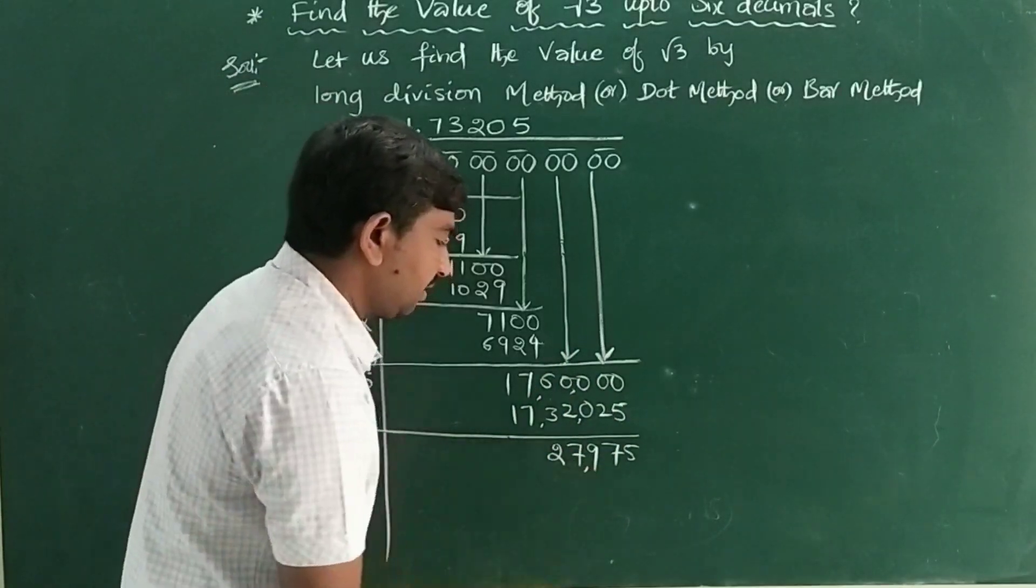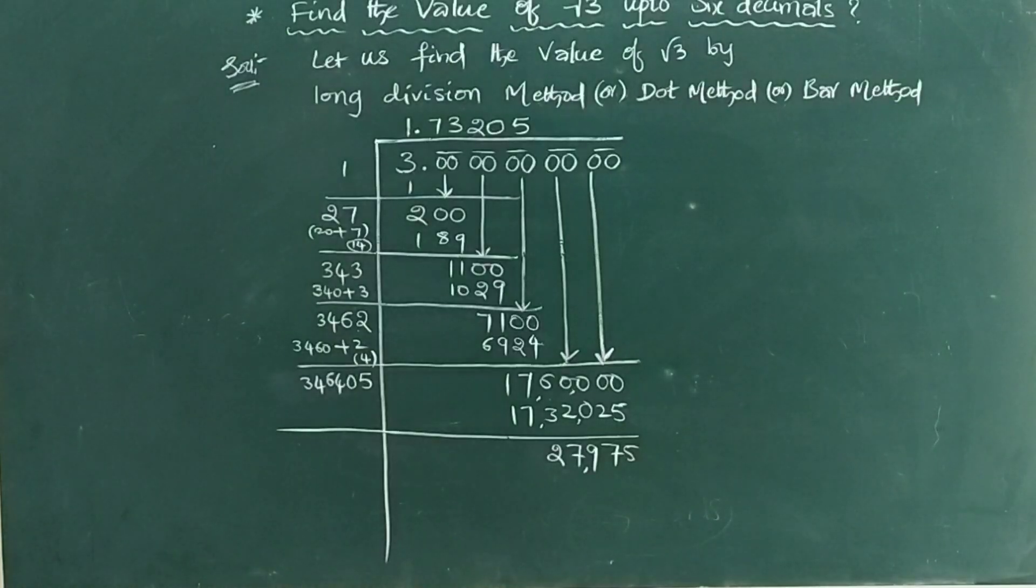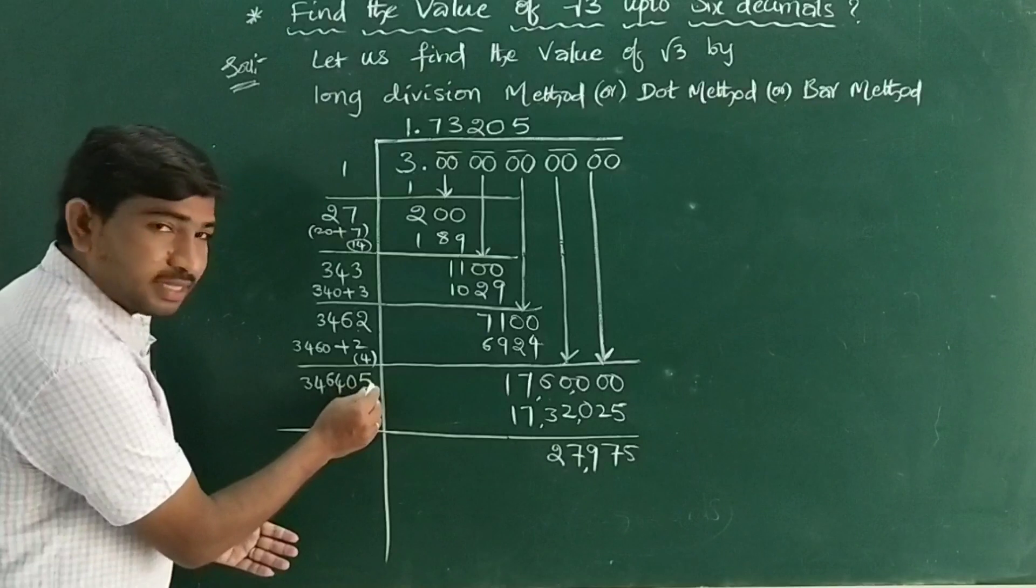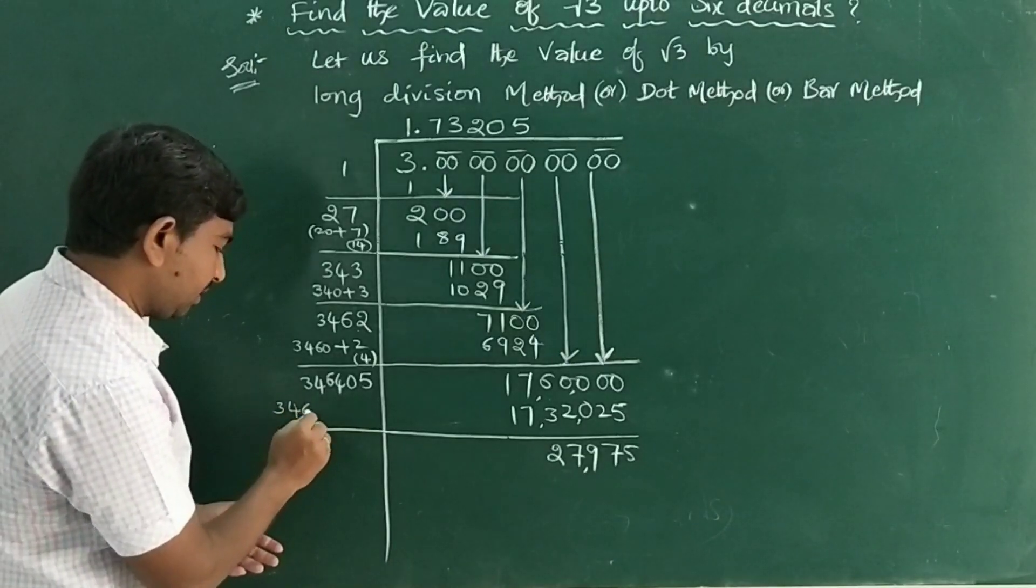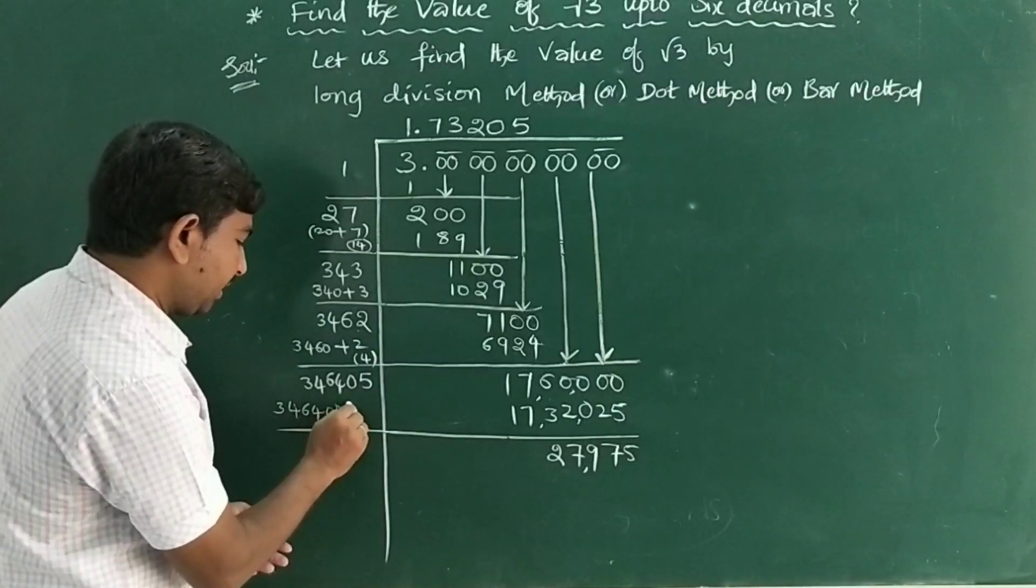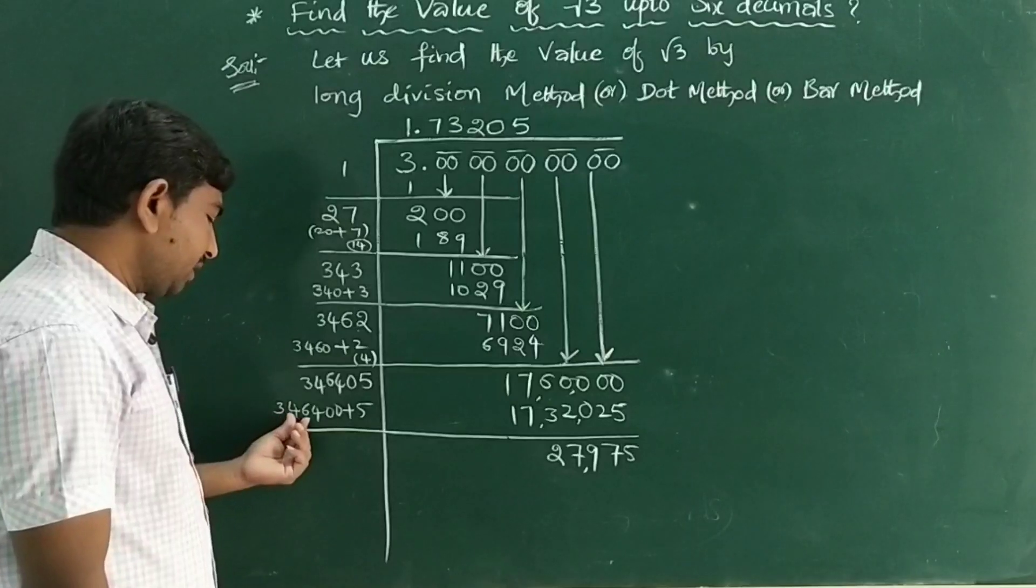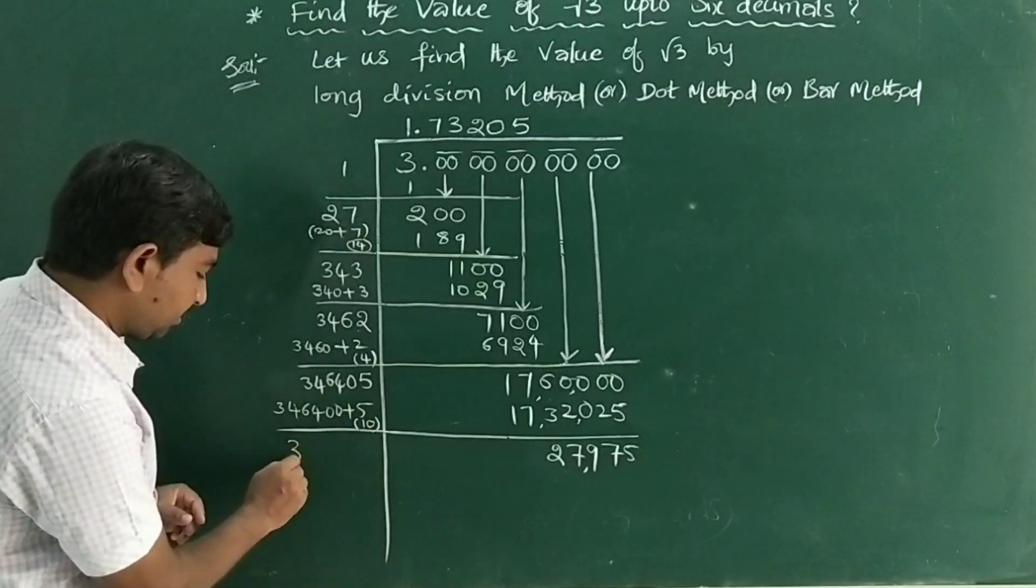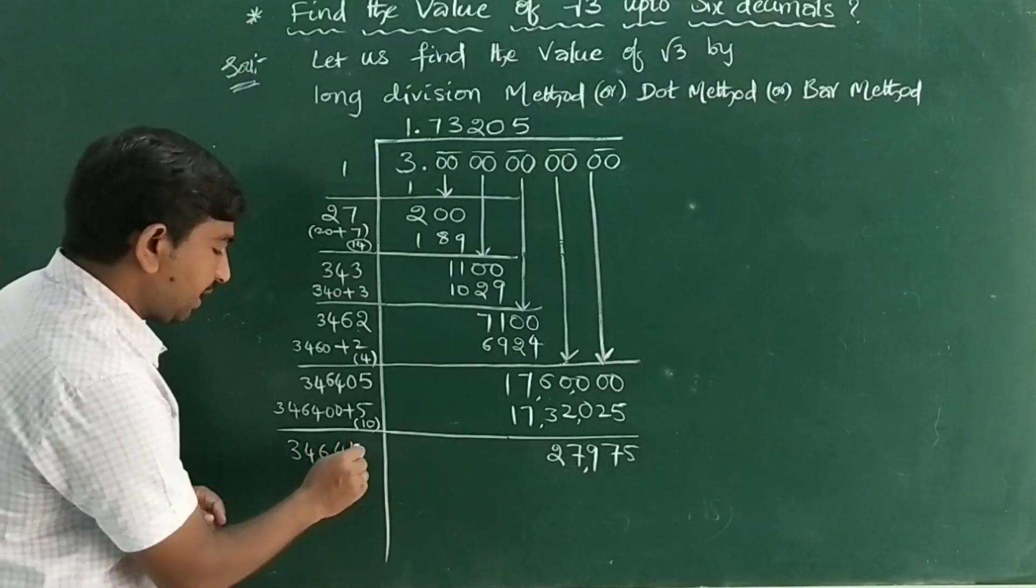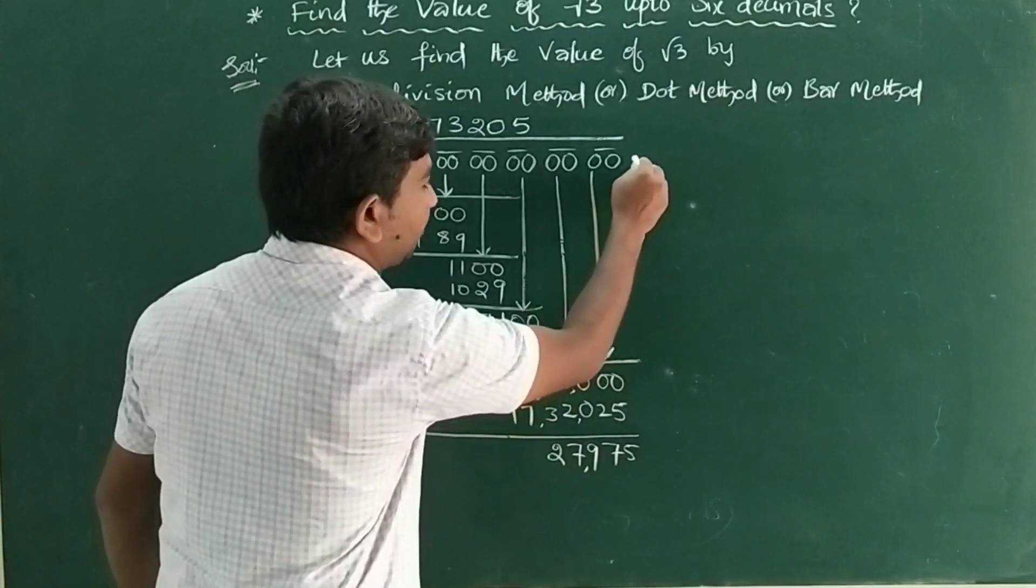27,975. Next number: the unit place number becomes double. So this can be written as 346,400 plus 5. This plus 5 becomes double, which is 10, so 4+10. That means 3,46,410. And we have 27,975, which is a very less number. So carry one more pair.